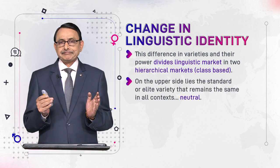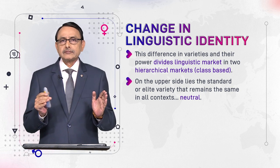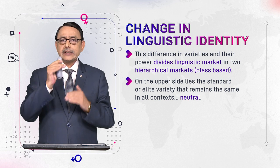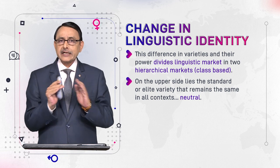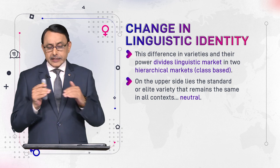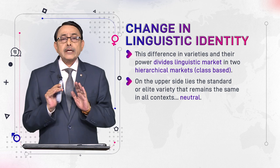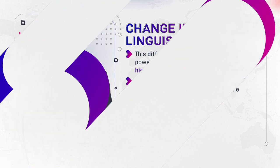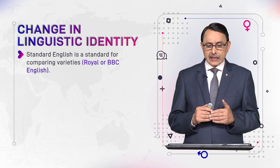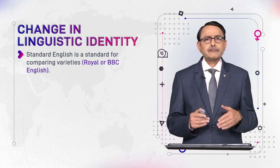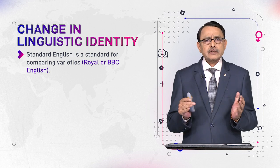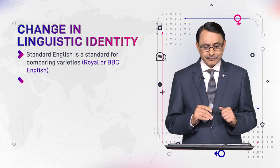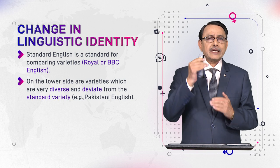The linguistic market where we exchange varieties and where the value of varieties is determined is highly class-based. If the class of a variety is high, its value is high; if it is spoken by the lower class, its value is lower. On the upper side of the hierarchical market lies the standard or elite variety, which remains the same in all contexts and has no link with any specific region. For example, standard English — Royal English or BBC English — is spoken by approximately 3% of the UK. This is the standard variety of English; it is not a dialect and is not related to any particular region or class.